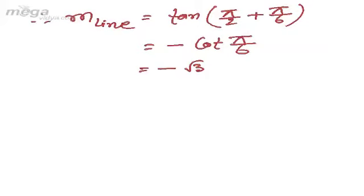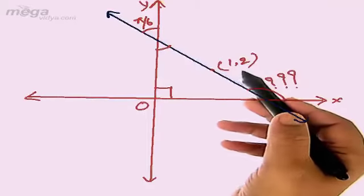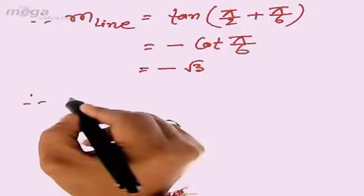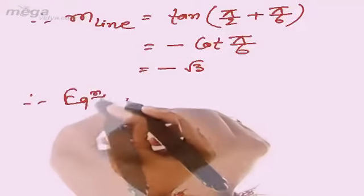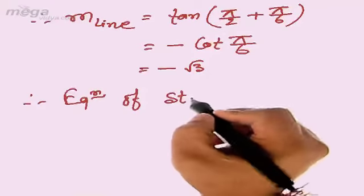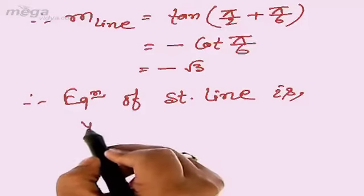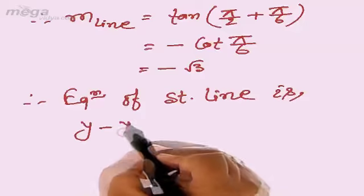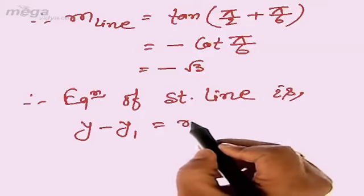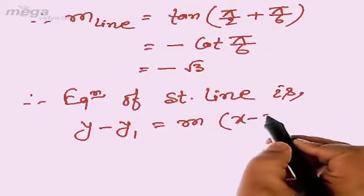Then we will use point-slope form to get the equation of the straight line, because the slope is given and this point (1,2) is given. Therefore, equation of straight line is, using the formula: y - y₁ = m(x - x₁).